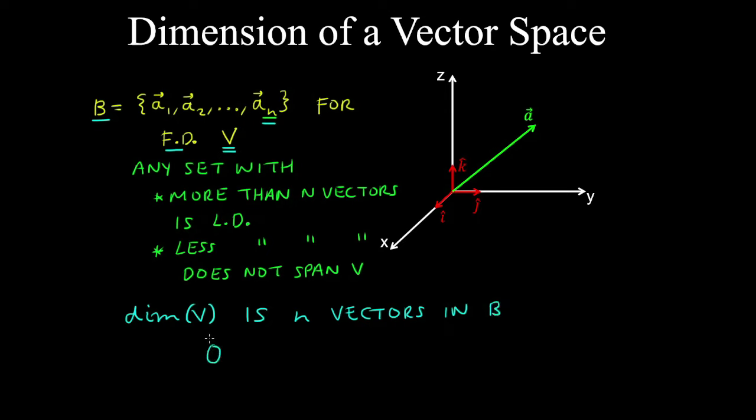The dimension of the zero vector space is defined to be zero.